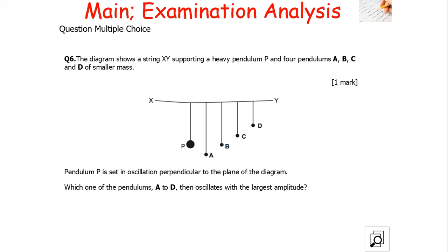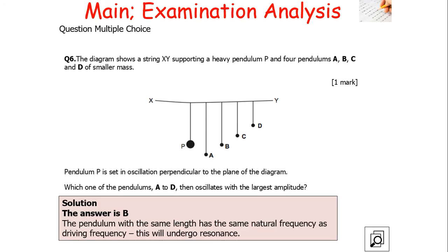A diagram shows string XY supporting heavy pendulum P and four pendulums A, B, C, D of smaller mass. Pendulum P is set into oscillation perpendicular to the plane. The answer is B - the pendulum with the same length has the same natural frequency as the driving frequency of P, so it undergoes resonance. The only factors affecting natural frequency are length and gravitational field strength. Since P and B have the same length, they have the same frequency, so pendulum B resonates and oscillates with the largest amplitude.